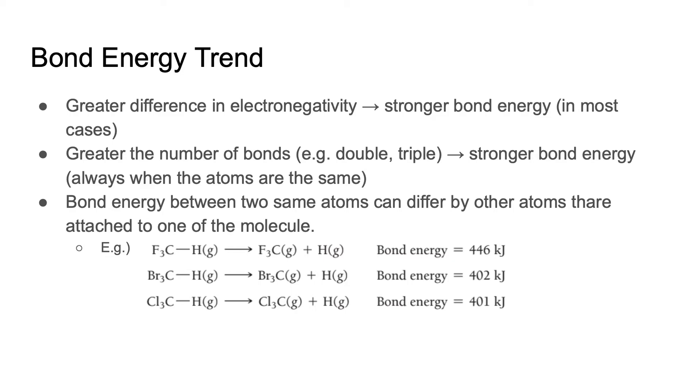This is the result of other atoms forming bonds with carbon, which is fluorine, bromine, and chlorine. Because these halogen atoms form bonds with carbons in different magnitude of strength and electronegativity, the bond energy of CH also differs.